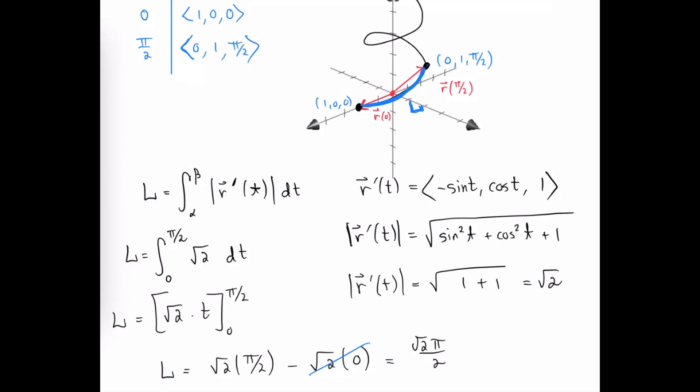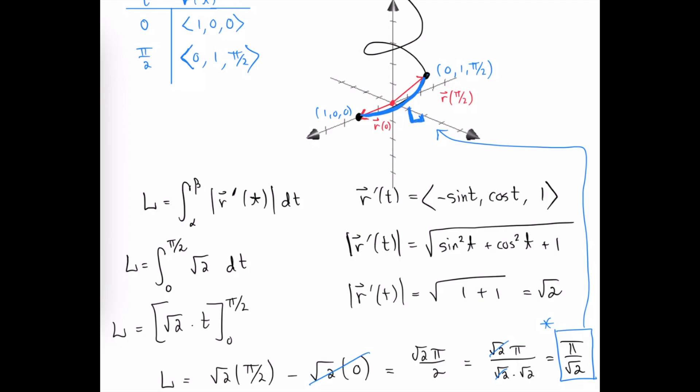So we end up with the square root of 2 times π over 2, which reduces. If we were to consider 2 to be √2 times √2, we could cancel one of these factors of √2 and simplify this down to being π over √2. So the arc length for this section of our helix turns out to be π over √2 units.